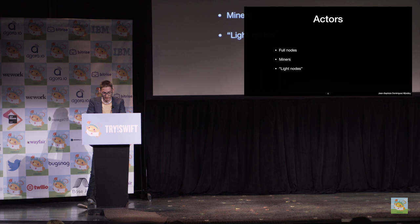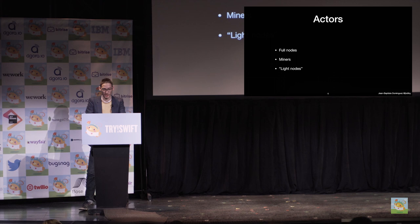Finally, the light nodes have similar roles as a full node, but they do not verify every single transaction — only the block header — and provide an SPV, called Simple Payment Verification, by a Merkle Proof. Merkle Tree is really a fundamental data structure in blockchain technology, so I advise you to have a look at it for a better understanding of light nodes.